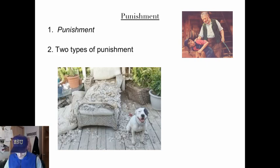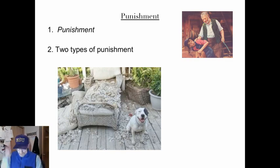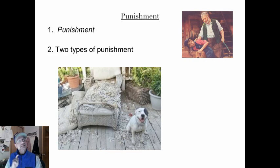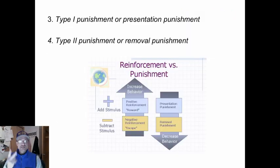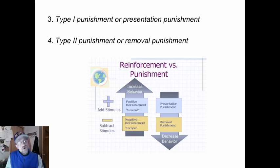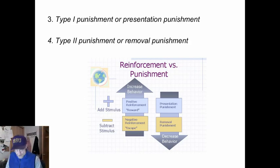Punishment, on the other hand, is a consequence that decreases or suppresses behavior. Behaviors followed by punishers are less likely to be repeated. There are two types of punishment. Type one punishment is presentation punishment, also called an aversive conditioner — something annoying or unpleasant. It is when an aversive conditioner follows a behavior.